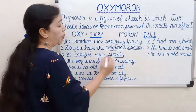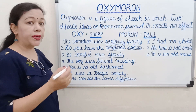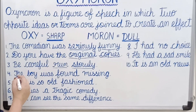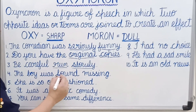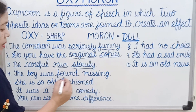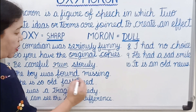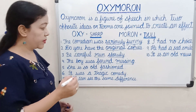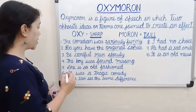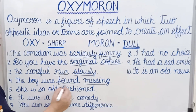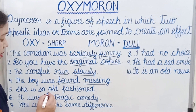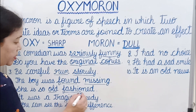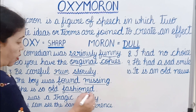Next: 'The boy was found missing.' Found and missing are both opposite words. Next: 'She is so old fashioned.' In this sentence, old and fashioned are both opposite words coming together in a sentence, so it is also an oxymoron.